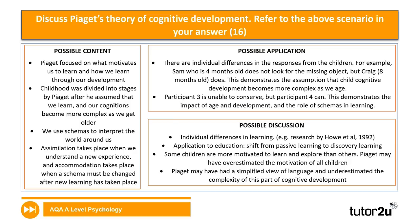For the AO2 application: link content to the stem as you outline it. Sam (four months old) does not look for the missing object but Craig (older) does, demonstrating that children's cognitive development becomes more complex with age — mesh this with your AO1 content. Participant three (five years old) isn't able to conserve, but participant four (ten years old) can, again demonstrating the impact of age, development, and the role of schemas in learning. Quote the stem meaningfully in conjunction with your content.